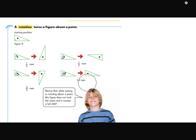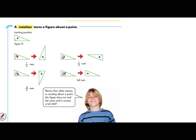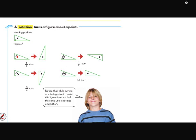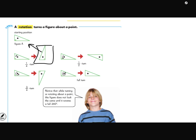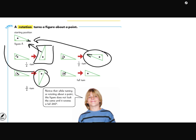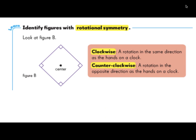A couple of key things - if you notice in these shapes, there's a dot in the middle. That's the center point where it's turned. We're looking for symmetry, meaning at any point in the turn, does the turned shape look exactly like the starting position? At one-fourth it doesn't, at one-half it doesn't, at three-fourths it doesn't, and obviously the full turn does. So this shape doesn't count as rotational symmetry, because at no point before a full turn did the shape look exactly the same.